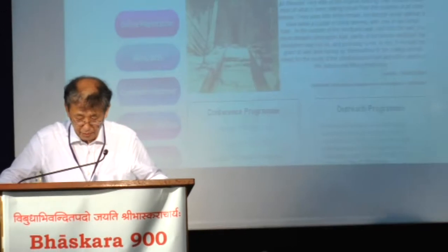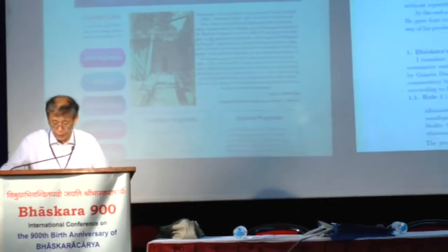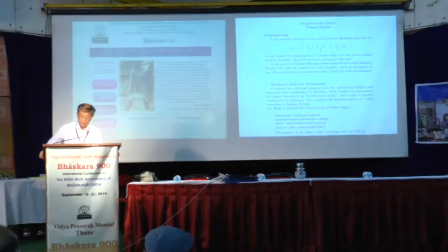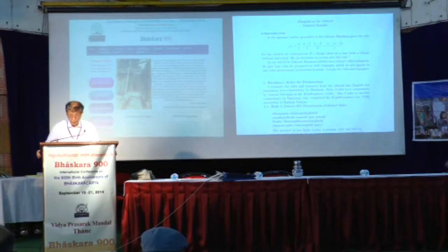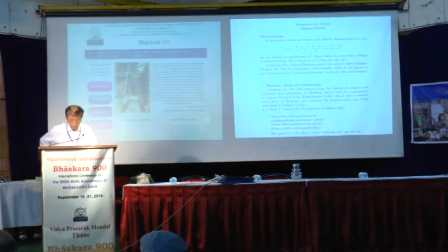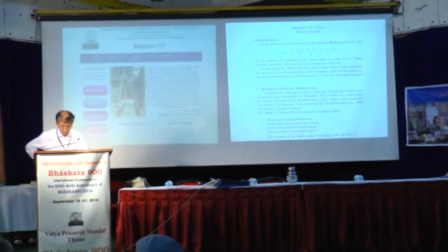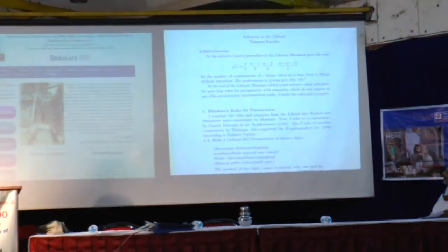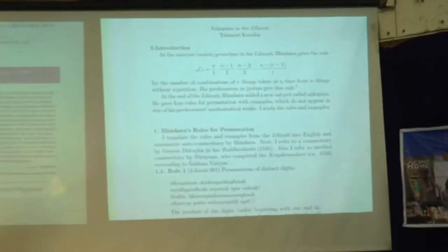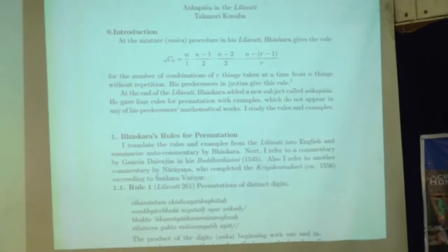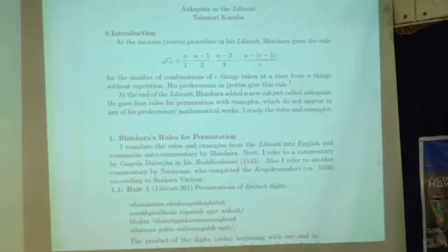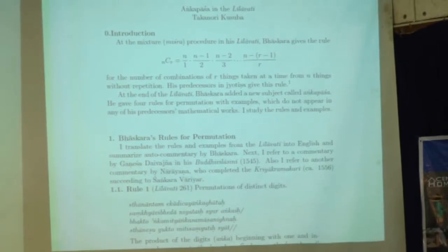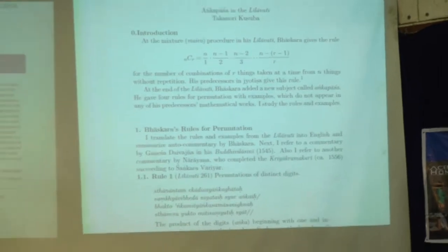At the end of the Lilavati, Baskara gave four rules for permutations with examples which do not appear in any of his predecessors' mathematical works. Here I study those rules and the examples. First, I translate the rules and the examples from the Lilavati into English and summarize his own commentary by Baskara himself. Next, I refer to a commentary by Ganesha Daivajna in his Buddhivilasini. Also, I refer to another commentary at one place by Narayana, who completed the Kriyakramakari. There are four rules.